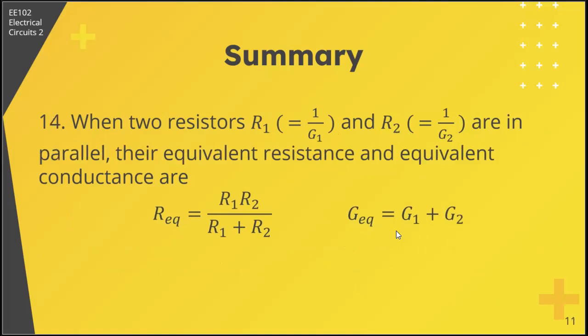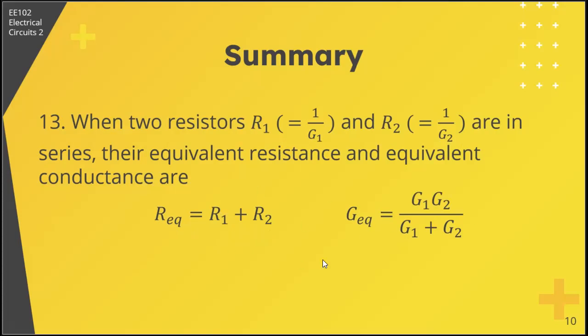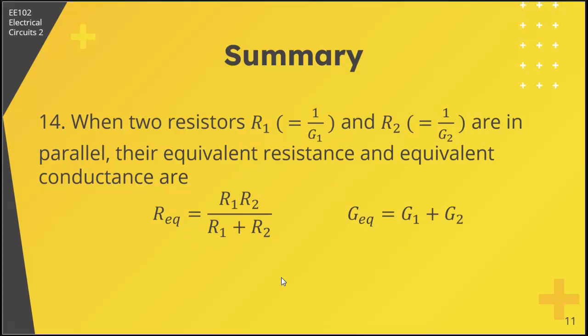Fourteenth, when two resistors R1 and R2 are in parallel, their equivalent resistance and equivalent conductance are: R equivalent equals R1 times R2 over R1 plus R2, and G equivalent equals G1 plus G2. So as you can see, when the two resistors are in series and when the two resistors are in parallel, the formulas have the same form.